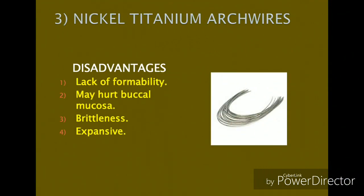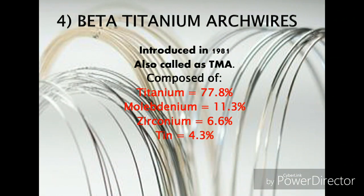The lack of formability is a major disadvantage of NiTi wires, because procedures requiring first, second, or third order bends in the arch wire for fine-tuning of tooth movement become very difficult. NiTi also possesses springiness, which means the wire can shift from one side to the other and may hurt the buccal mucosa.